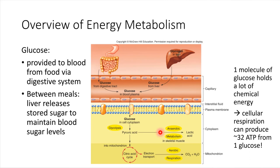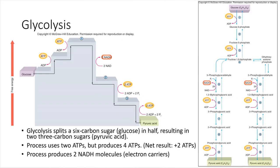Let's look in detail at glycolysis — the first step in breaking down a glucose molecule. To break a glucose molecule in half requires an input of energy, so in the process of glycolysis we actually consume two ATPs initially — two ATP molecules are required to break the bonds in glucose. But once that initial step is complete, the rest of glycolysis produces energy molecules. In the end we produce four ATP molecules, so the net result is two ATPs: we used two, made four, giving us a net of two ATPs available for use by the cell.